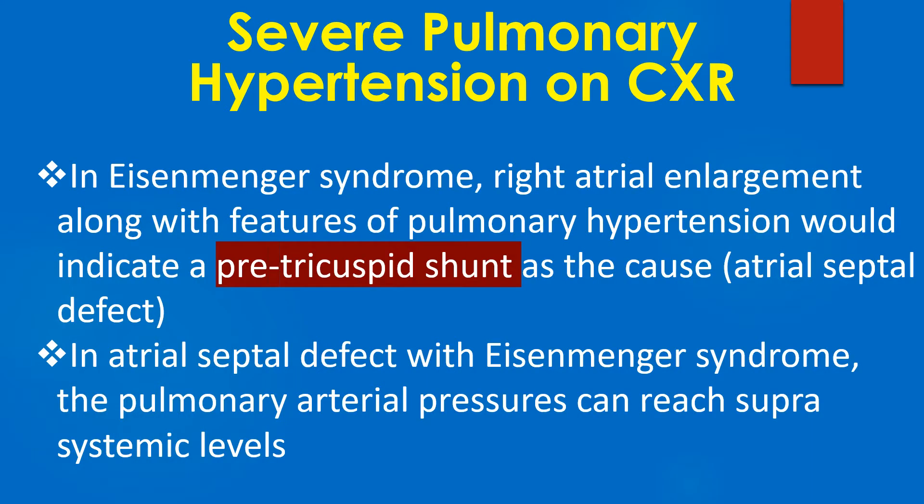In Eisenmenger syndrome, right atrial enlargement along with features of pulmonary hypertension would indicate a pre-tricuspid shunt as the cause.